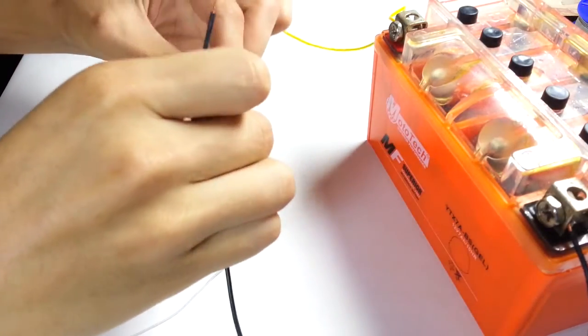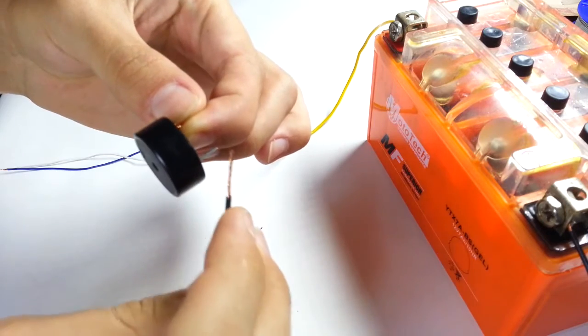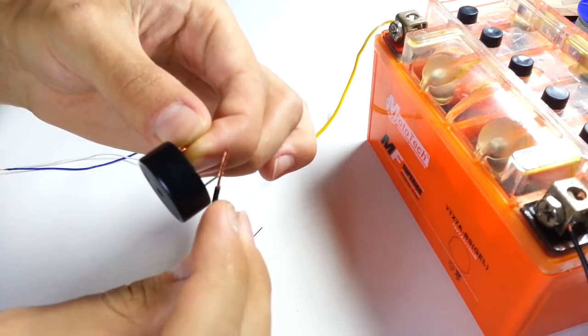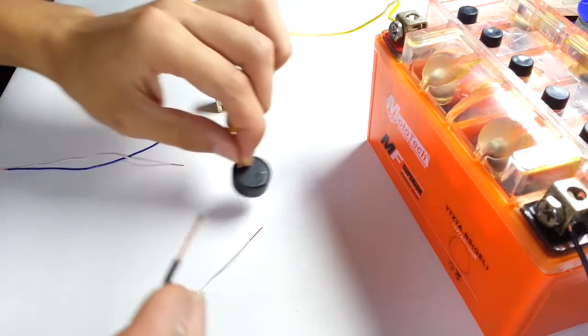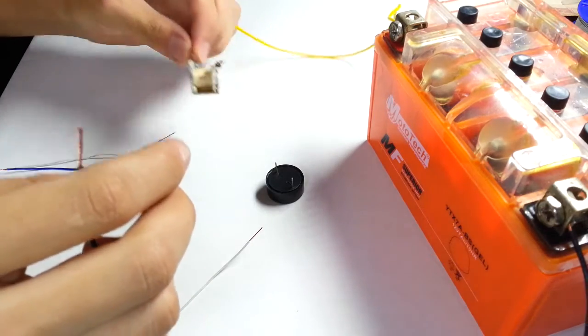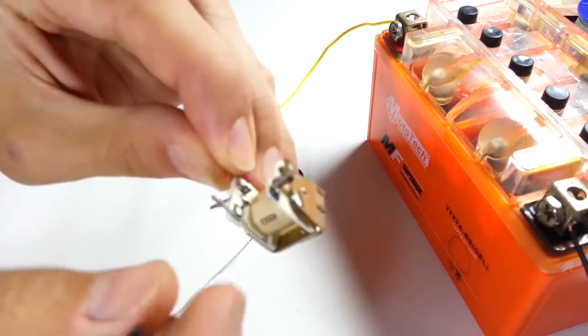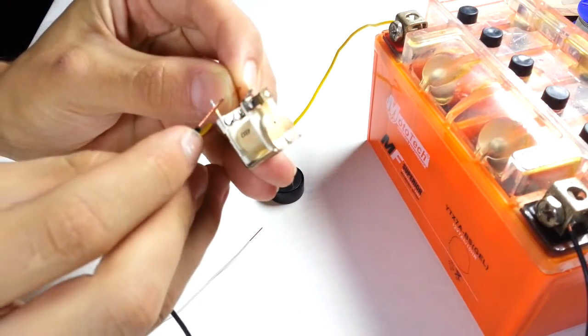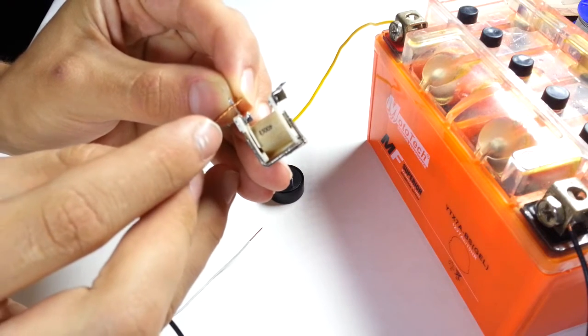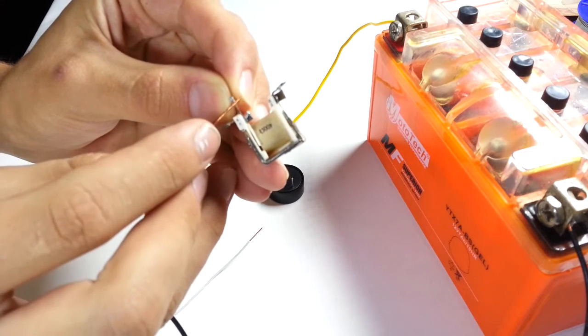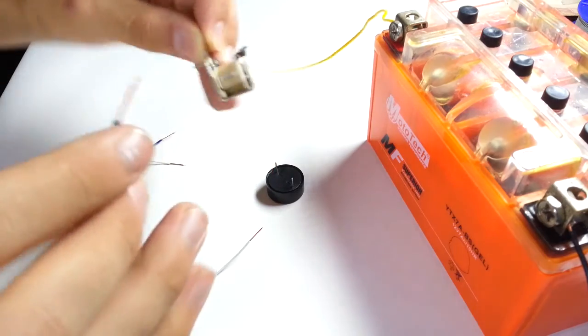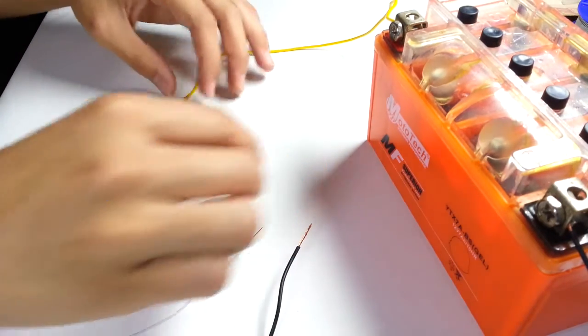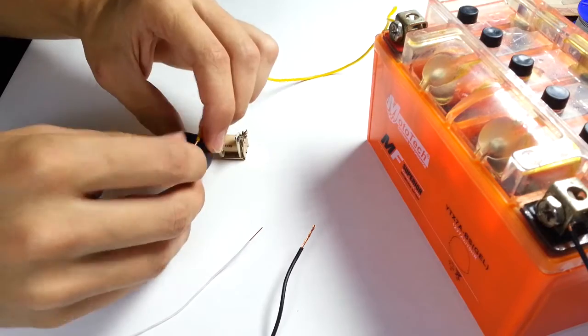First let's check the buzzer. It works. Then check relay. It works ok. Then connect normally closed contacts of the relay to the buzzer sequentially.